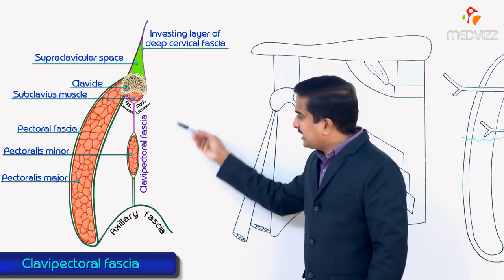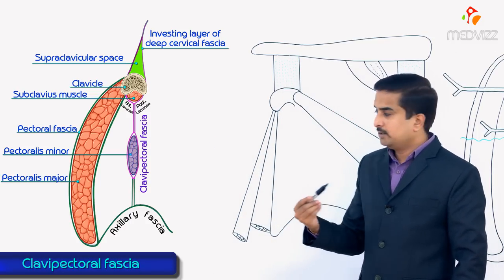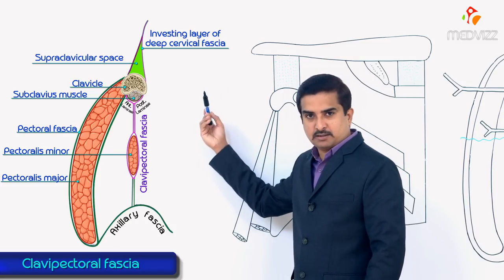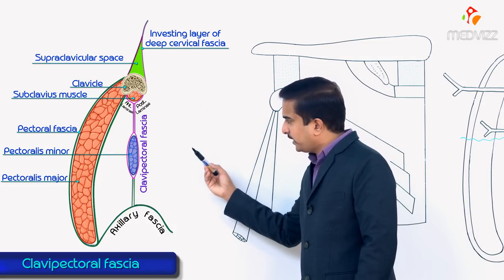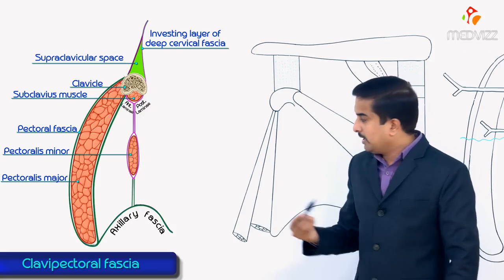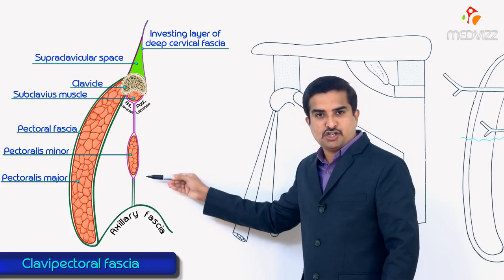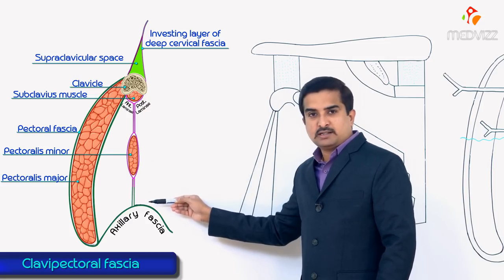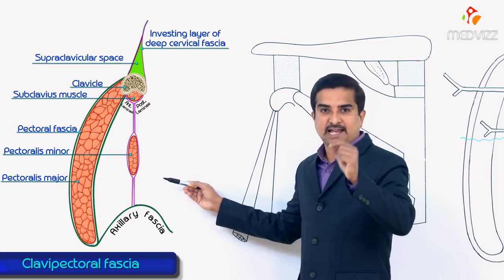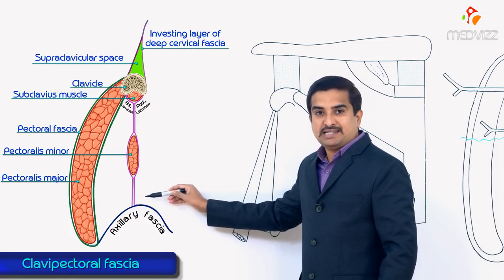In its lower part, the clavipectoral fascia splits to enclose the pectoralis minor muscle. So the upper part splits to enclose the subclavius muscle, and the lower part splits to enclose the pectoralis minor muscle. Below the level of the pectoralis minor, this part of the fascia extends downwards as the suspensory ligament of the axilla.